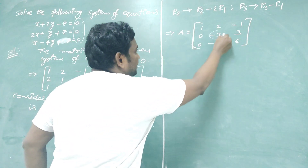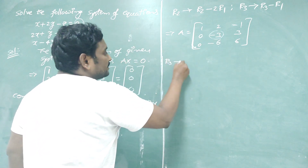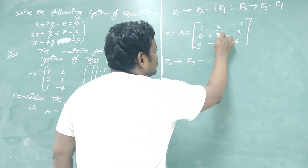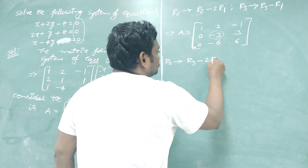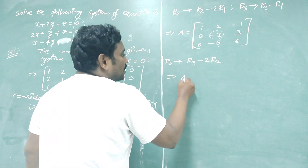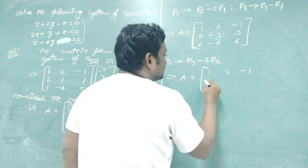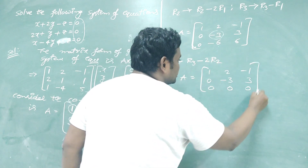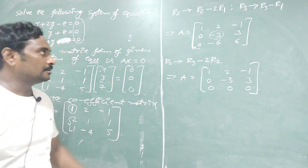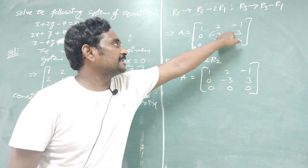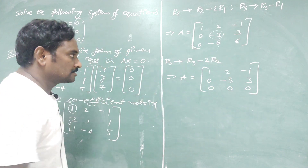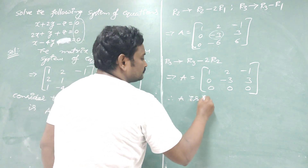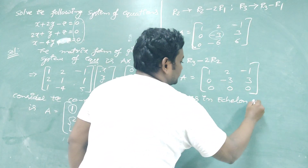Now using the second pivot element, we make the element below it zero with the operation R3 → R3 minus 2R2 (since 2 times 3 = 6). After this operation, A becomes: row 1: 1, 2, minus 1; row 2: 0, minus 3, 3; row 3: 0, 0, 0. Both last rows were proportional, so the last row is all zeros — minus 6 plus 6 = 0 and 6 minus 6 = 0. Therefore A is in echelon form.